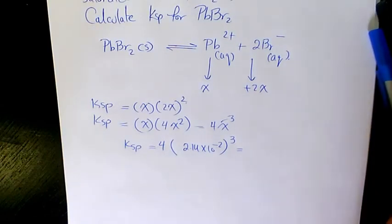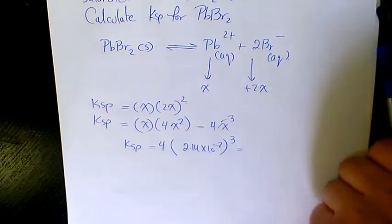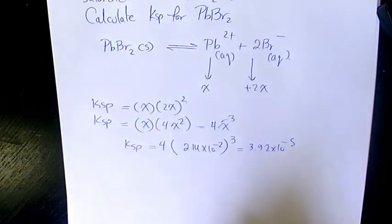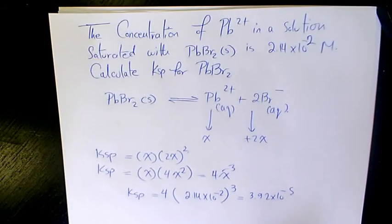So Ksp will be 4 times 2.14 times 10 to the power of negative 2 to the power of 3. That's going to make it 3.92 times 10 to the power of negative 5, which is the value of Ksp.